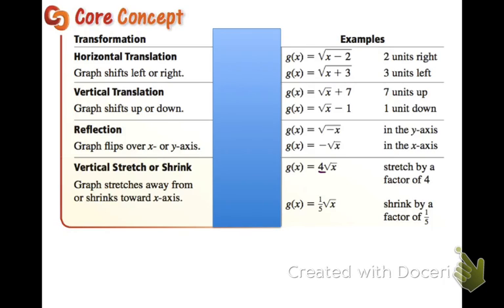With stretches and shrinks, we're multiplying by a factor outside of our square root. If we multiply by a number that's bigger than 1, like 4 or like 3 halves, then we're going to stretch. If we multiply by a number that's less than 1, like 1 fifth, then we're going to shrink, or you can also call it compress.